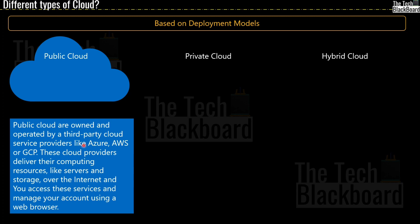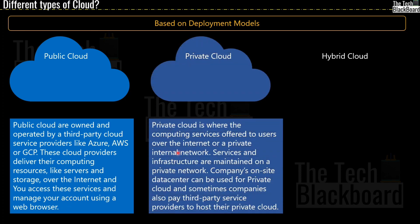Moving on, we have private cloud. Private cloud is where computing services are offered to users over the internet or a private internal network. Services and infrastructure are maintained on a private network. A company's on-site data center can be used for private cloud, and sometimes companies also pay third-party cloud providers to host their private cloud. I gave you a lot of details on data centers and how they are built in the second part of this series — the link is in the I button and in the description box.